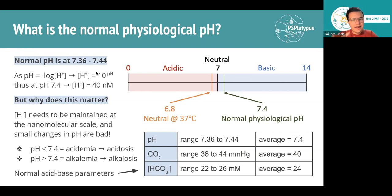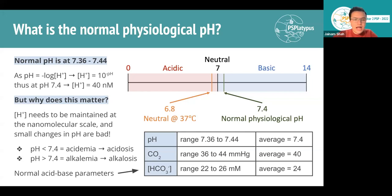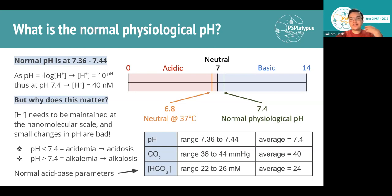A pH of 7.4 corresponds to a hydrogen ion concentration of about 40 nanomolars. That's not a lot, which means this concentration needs to be maintained on a very small scale. Even tiny changes in pH result in quite drastic changes to our H plus concentration. If pH goes lower than 7.4, becoming more acidic, we call it acidosis or acidemia.